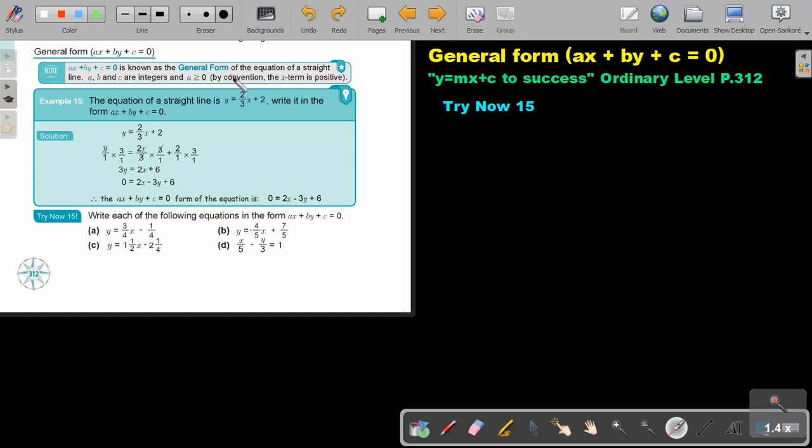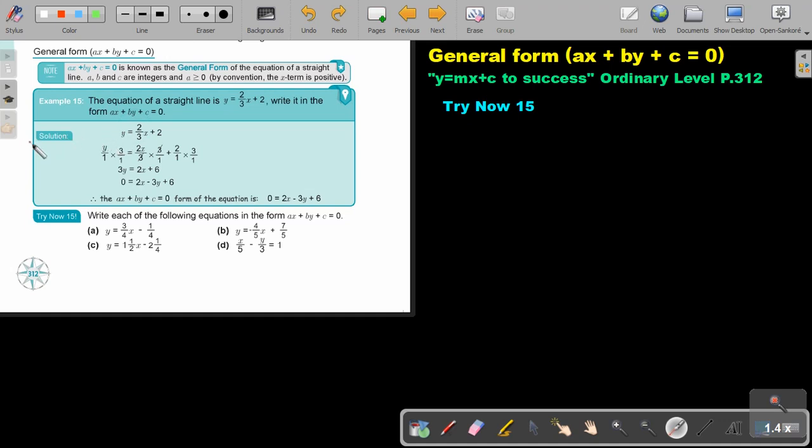Note, it's known as the general form of the equation of a straight line. a, b, and c are integers, so not fractions, and a must be bigger or equal to 0. By converting, the x term is positive. So very important that the first term must not be negative, it must be positive. Otherwise, you have to just change the signs throughout the equation.